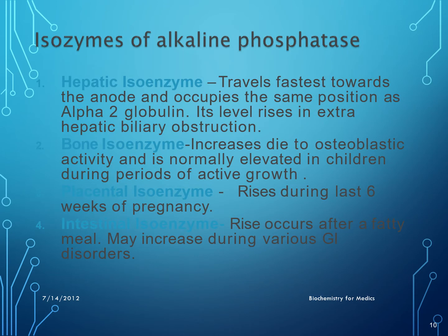The isoenzymes of alkaline phosphatase include hepatic, bone, placental, intestinal, and Regan isoenzymes. The hepatic isoenzyme travels fastest toward the anode in electrophoresis, occupying the alpha-2 globulin position, and its level rises in extrahepatic biliary obstruction. The bone isoenzyme increases due to osteoblastic activity and is normally elevated in actively growing children. The placental isoenzyme is raised during the last 6 weeks of pregnancy. The intestinal isoenzyme rises after a fatty meal and may also increase in various gastrointestinal disorders.